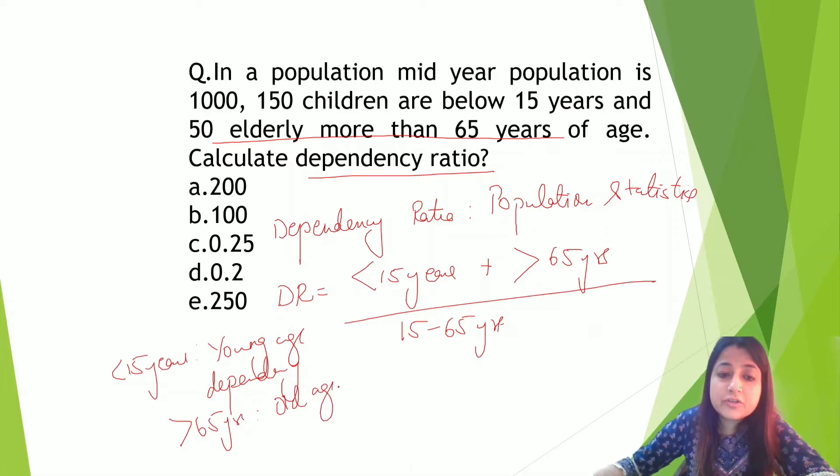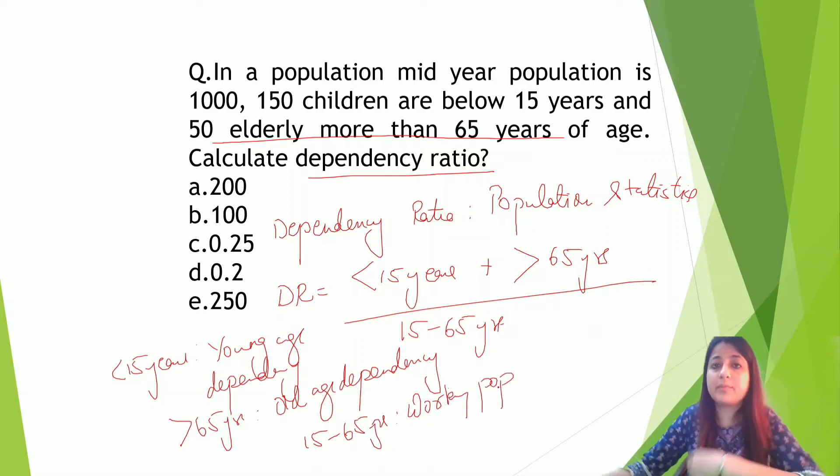And more than 65 years means old age dependency. When we talk about 15 to 65 years, this is the working population.